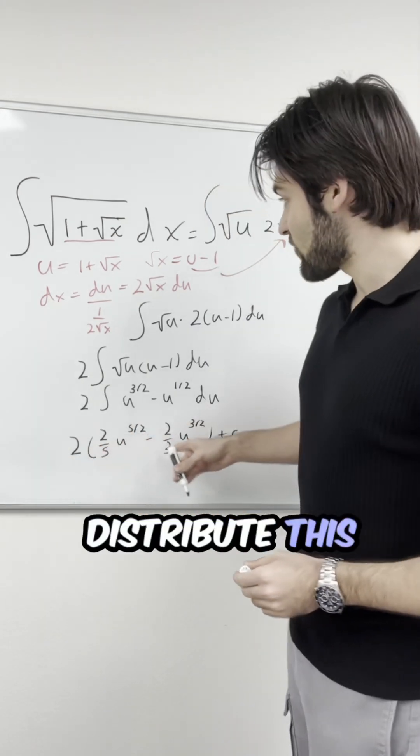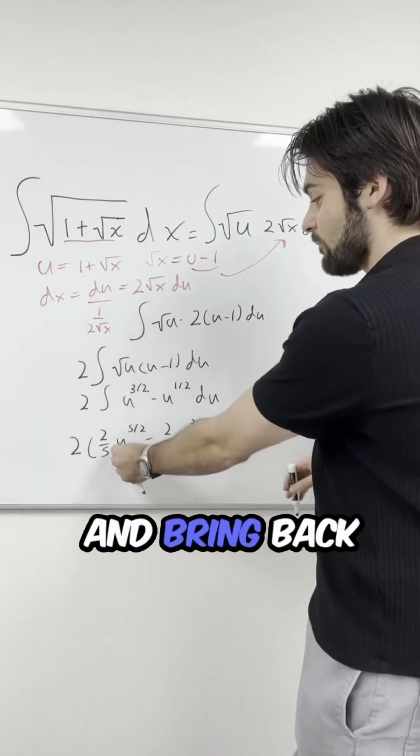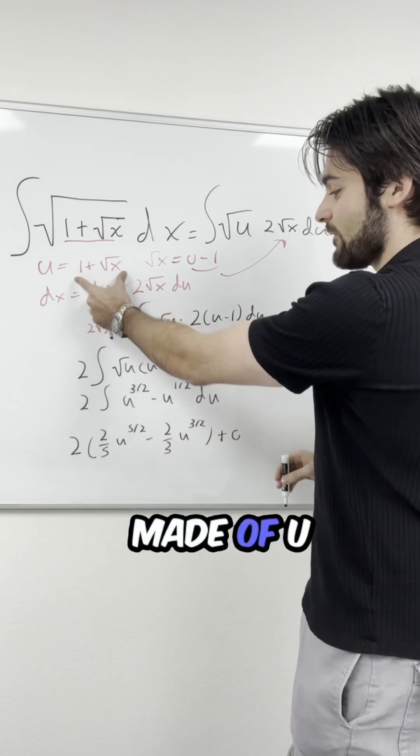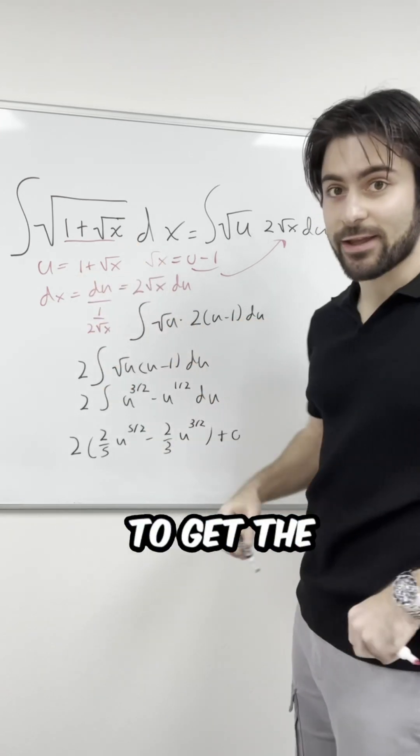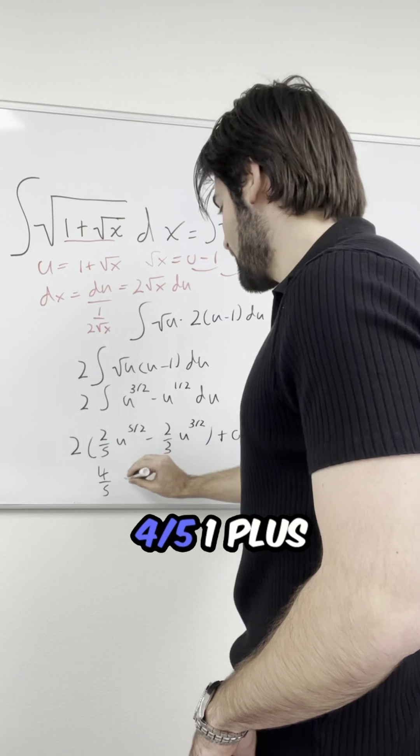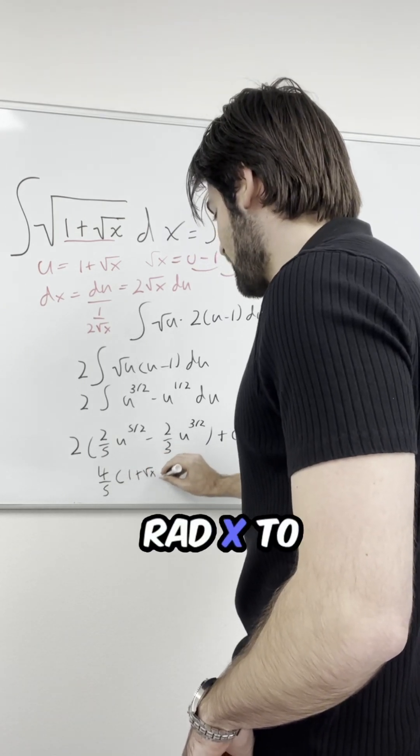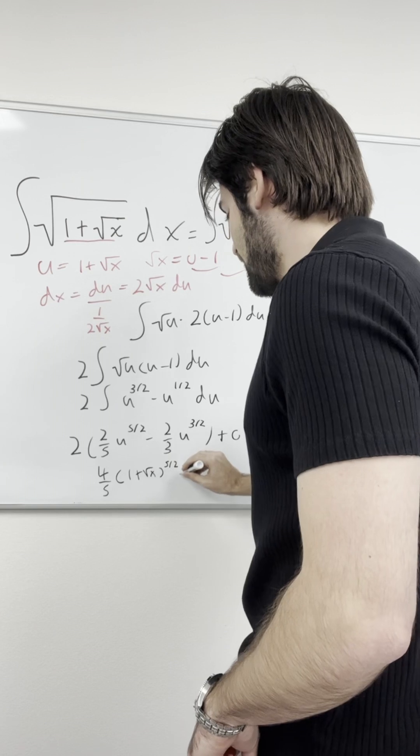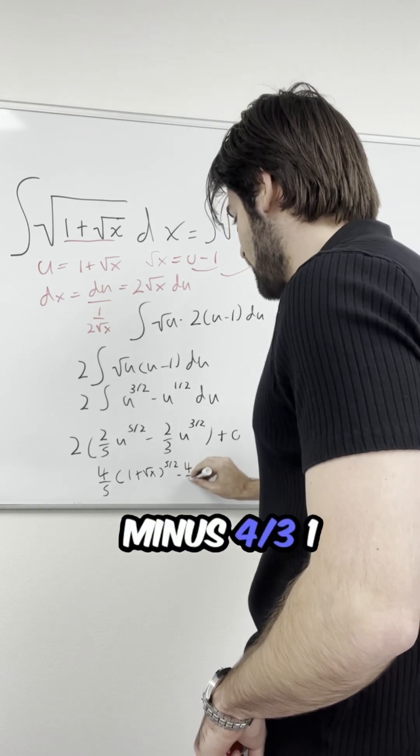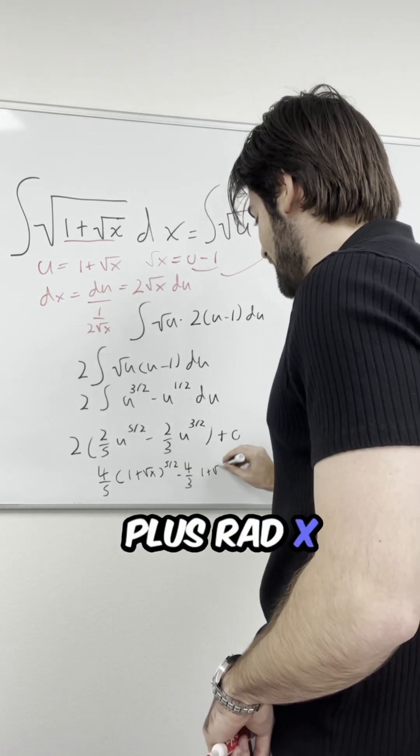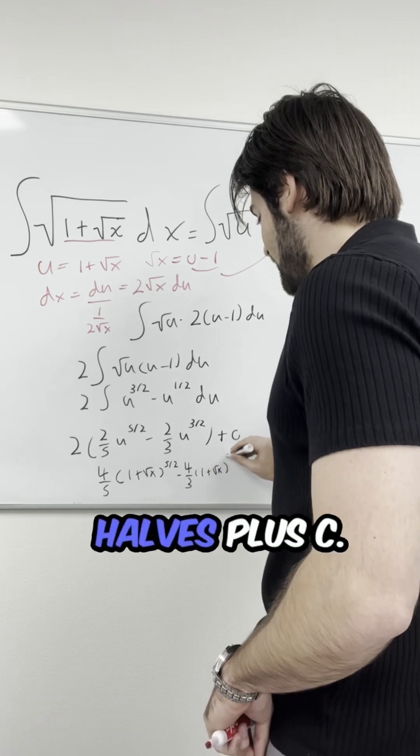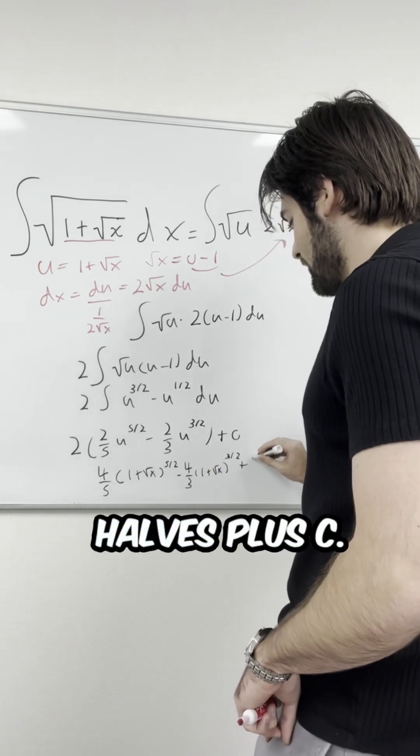Lastly, I will distribute this 2 and bring back the substitution I made of u being 1 plus square root of x to get the final answer: 4 fifths times 1 plus square root of x to the 5 halves minus 4 thirds times 1 plus square root of x to the 3 halves plus c.